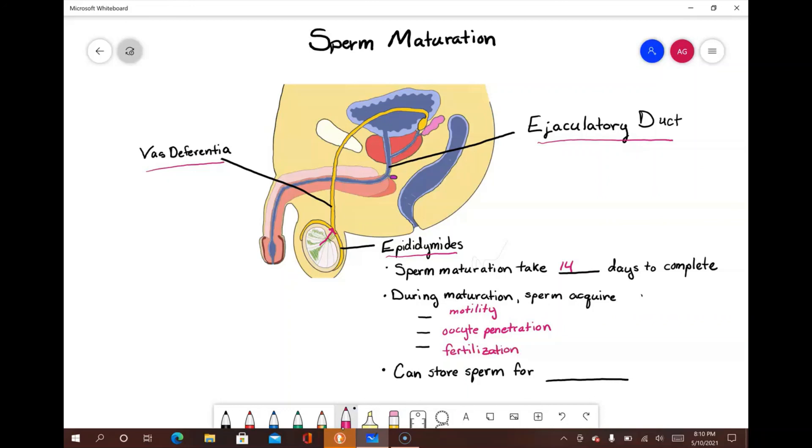The epididymis can also store sperm for several months, although in males that rarely happens. Once the sperm cells are mature and sexual arousal occurs, the epididymis releases sperm into the vas deferens through peristaltic contractions of smooth muscle in preparation for ejaculation.